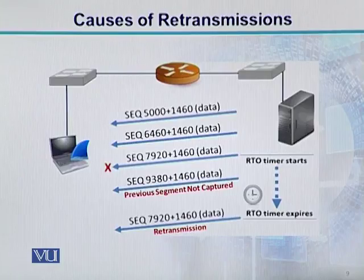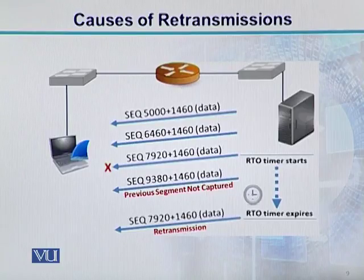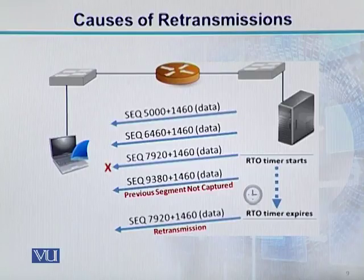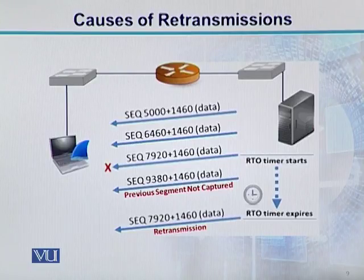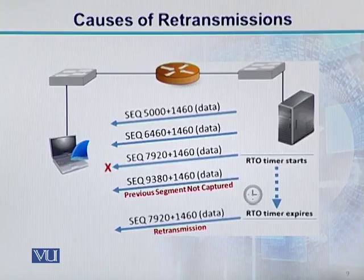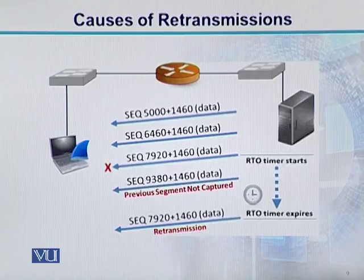Doosra packet ka sequence number hai 6460, ismein bhi 1460 bytes ka data hai. Teesra jo packet hai, uska sequence number hai 7920, same amount of data. Aur jo chautha packet tha, uske andar sequence number hai 9380, plus 1460 ka data usme rakha hai. Yeh chaaro packets server generate kar raha hai aur transmit kar raha hai towards the client side. Hum assume karte hain ki jo packet number 3 hai, woh lost ho jata hai. Toh sender isko retransmit kaise karega? Sender ne ek timer use kiya tha — retransmission timeout value — yeh timer start kiya, aur jo hi yeh timer expire hota hai, sender retransmit kar dega: third packet with sequence number 7920, same data ke saath. Toh yeh ek retransmission hai.